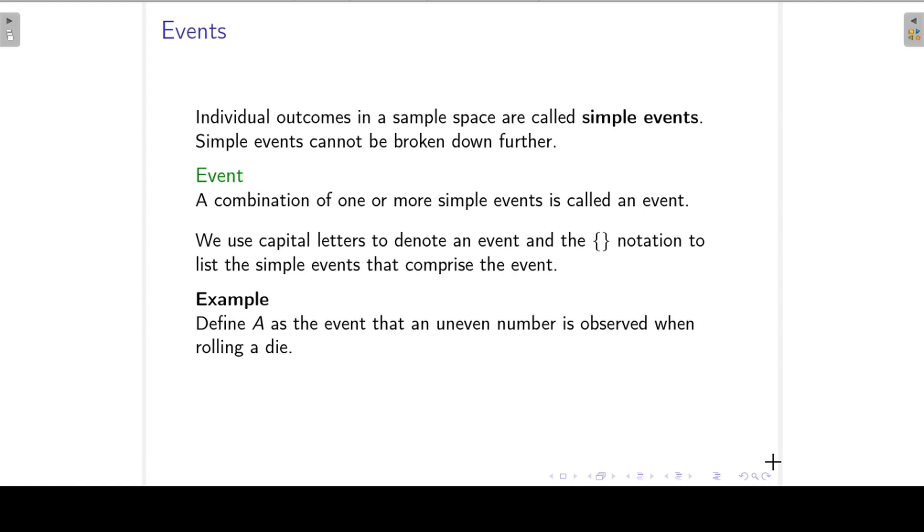For example, if we define the event A as the event that an uneven number is observed when rolling a die, then we can write it like this. So that will be my event A is and then we list the simple events that comprise this event. So that will be 1, 3 and 5.